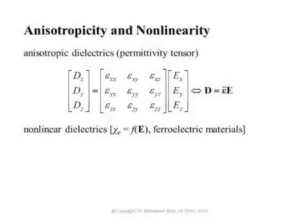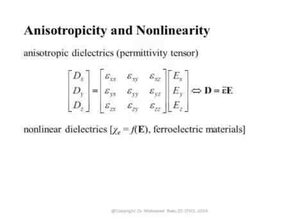In this course we focus on linear materials, where D is a linear function of E, and isotropic materials, where the property is the same in all directions. In reality, there are other types of materials used very often in electromagnetics, like anisotropic materials. In an anisotropic material, one component of E — say E_x — can create up to three components of D.